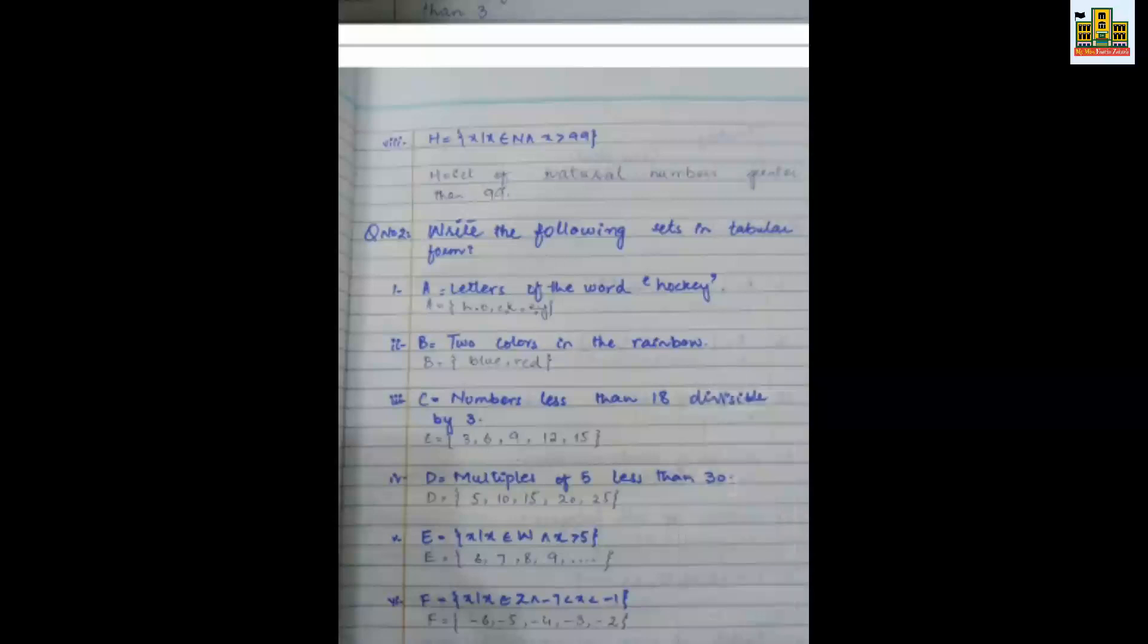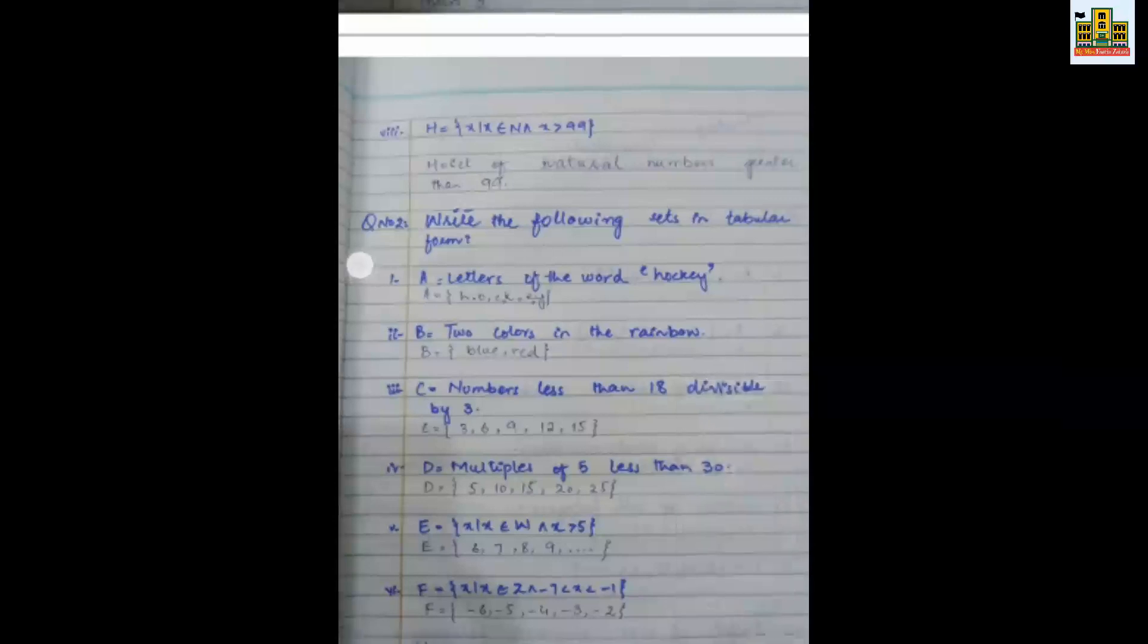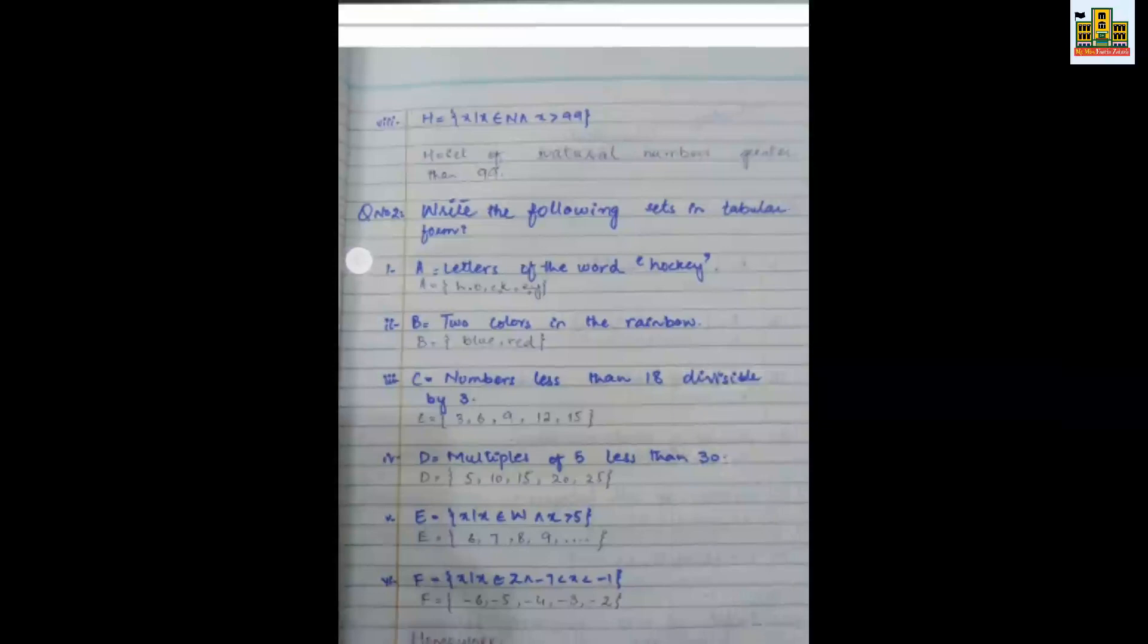Next question number four is multiples of 5 less than 30. You have to write 5 multiples of 5 less than 30, but less than 30. You have to write 30 from less than 30, then you have to write 30 number.